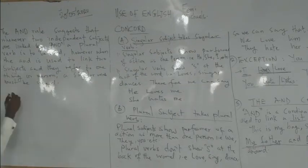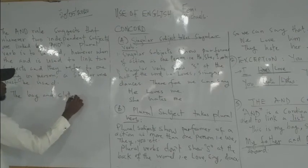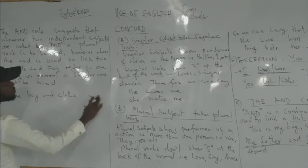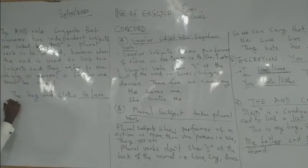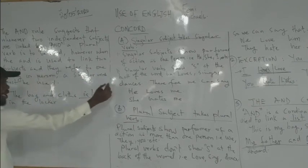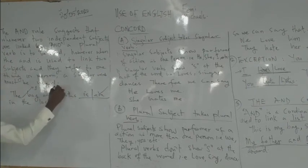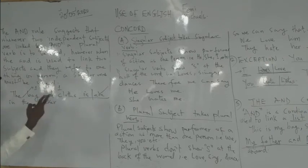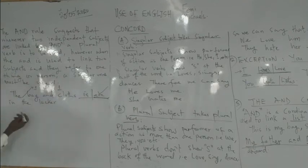When I say 'the bag and clothes are in the locker' — the bag is one, clothes is one, together they are two, and that two attracts a plural verb: 'are'. The father and mother of the boy were around — these are two different people, so we use the plural past verb 'were.'